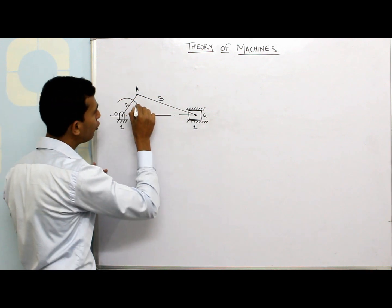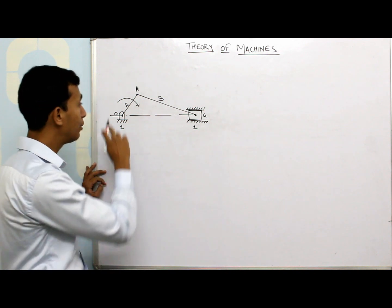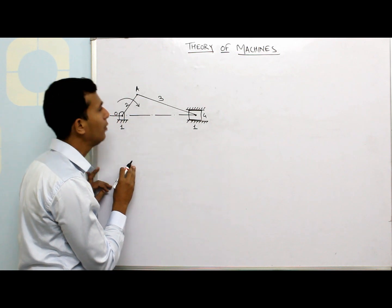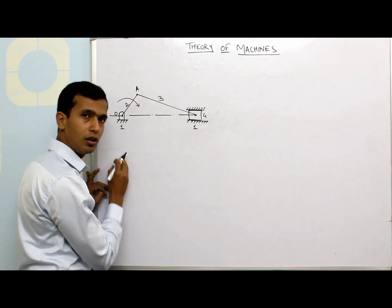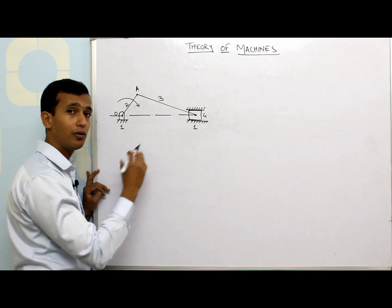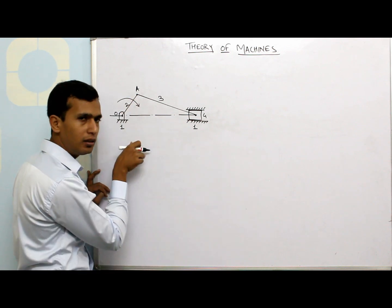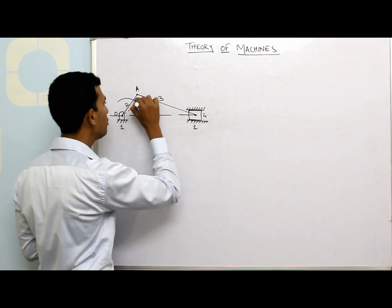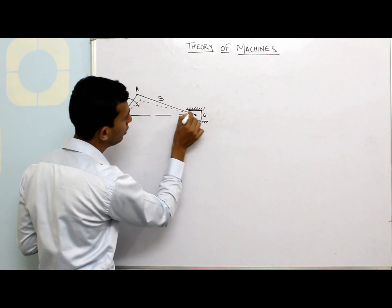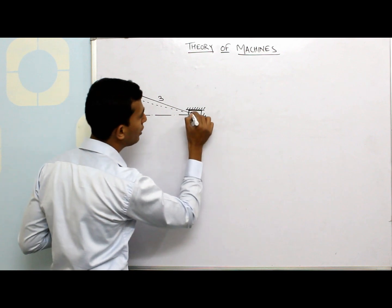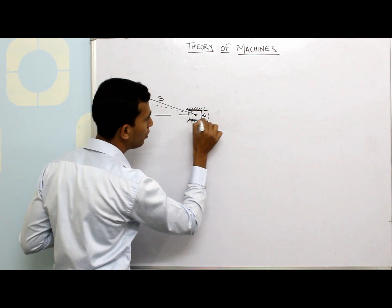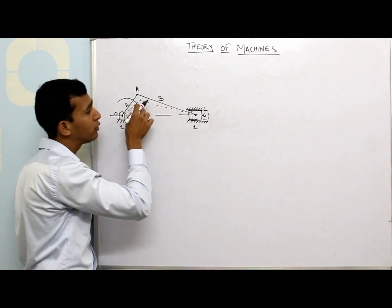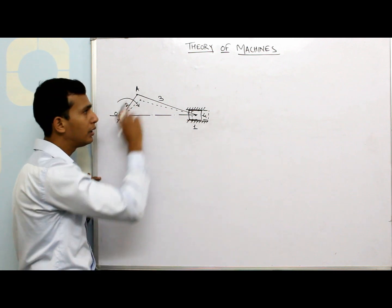If a certain amount of rotational input is given to link number 2, because of this rotation of OA, this rotational motion of one element causes motion of other elements. If this gets rotated, the connecting rod will come forward to a new position, and accordingly the piston will be having a new position. So because of motion of one element, there is a motion of the remaining elements in this system.